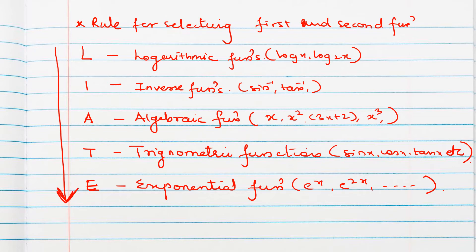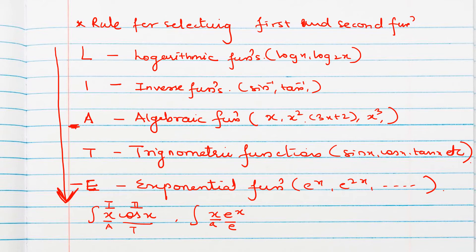For example, given the product x·cos(x), x is algebraic and cos x is trigonometric — A comes before T in LIATE, so x is the first function and cos x is the second function. Similarly, for x·e^x, x is algebraic and e^x is exponential — A comes before E, so x is first and e^x is second.